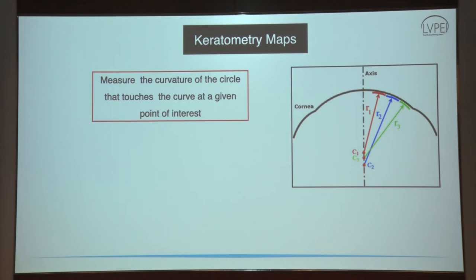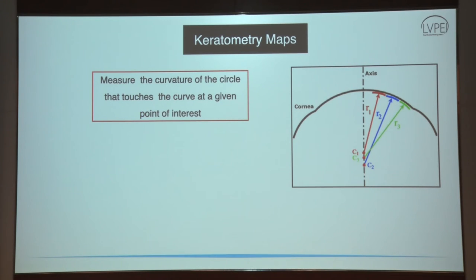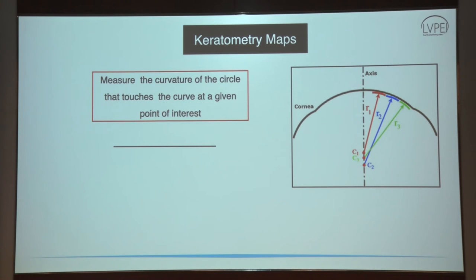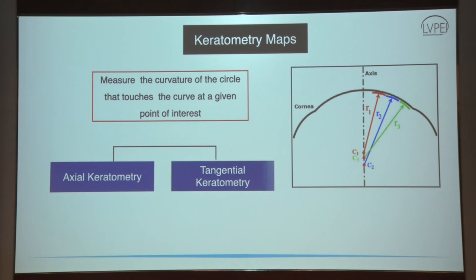What are keratometry maps? There are four different kinds of maps depicted in a quad map: the keratometry map, the anterior elevation map, the posterior elevation map, and the thickness map. Keratometry maps measure the curvature of the circle that touches a particular point of interest. There are two types: axial keratometry and tangential keratometry.